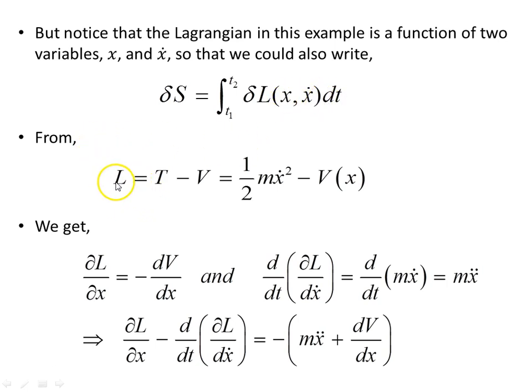From the Lagrangian, T minus V is this object here. We get the partial derivative of the Lagrangian with respect to the x coordinate. Here's the derivative of this with respect to the x coordinate, gives us minus dV/dx. And this object here, the time-based derivative of the derivative of the Lagrangian with respect to x dot, will give us d/dt of mx dot. Differentiate this object here, we'll end up with mx dot. d/dt of that, and that will give us mx double dot.